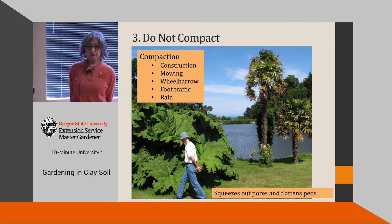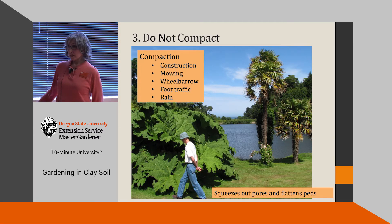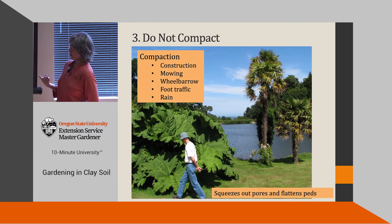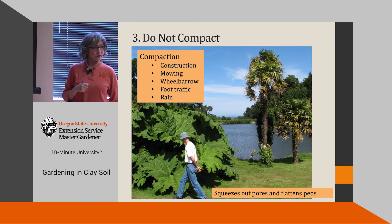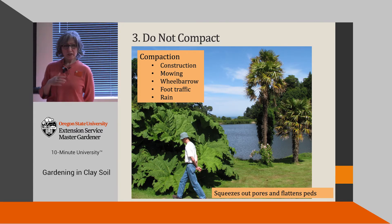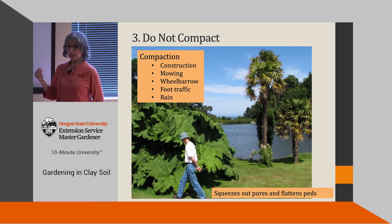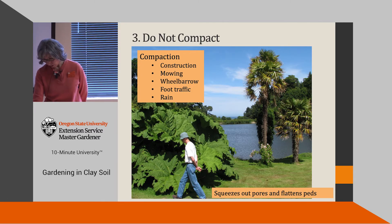Step three: do not compact. Most of us garden over compacted soil because the soil was compacted when the house was built. But we can make sure it does not get more compacted. Stay off the soil rather than walking over it, change your mowing pattern, change your wheelbarrow path or use a designated path, and cover the soil with mulch to protect it from rain. Compaction is bad because it squeezes out pores — critical in healthy soil — and makes the soil peds flat rather than rounded.